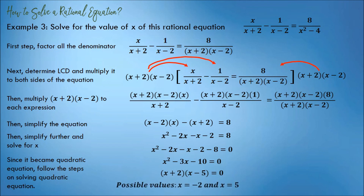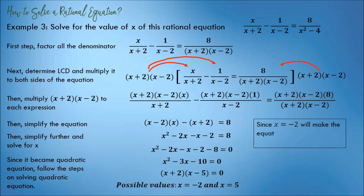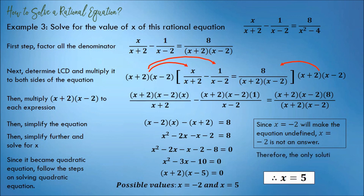Equate each factor to 0. So the possible values are negative 2 and positive 5. But take note: since negative 2 will make the original equation undefined, negative 2 is not an answer. Therefore, the only solution for the given equation is x equals 5.